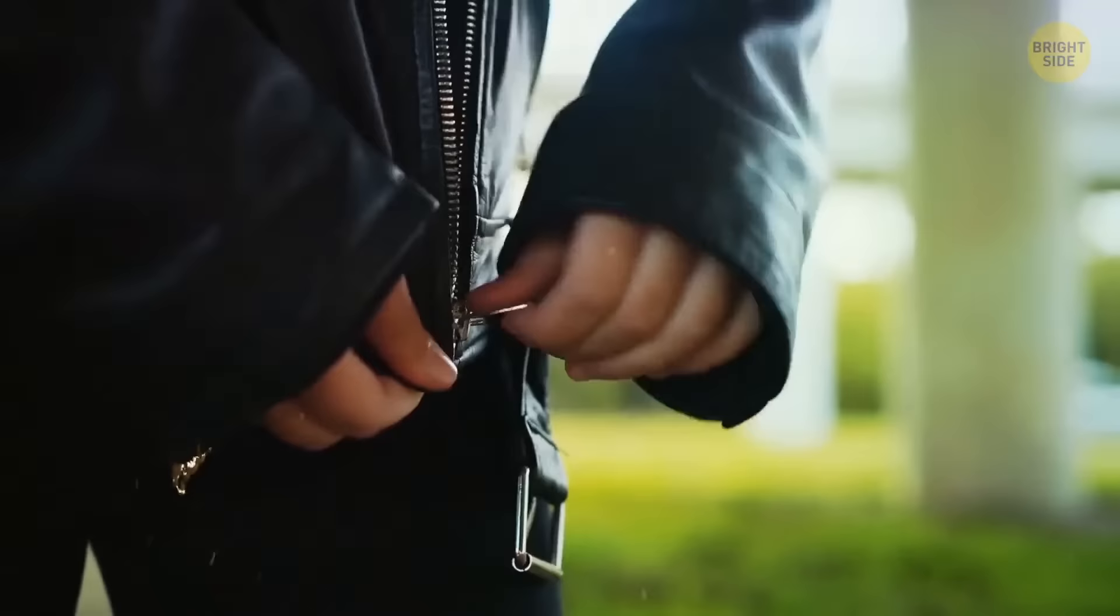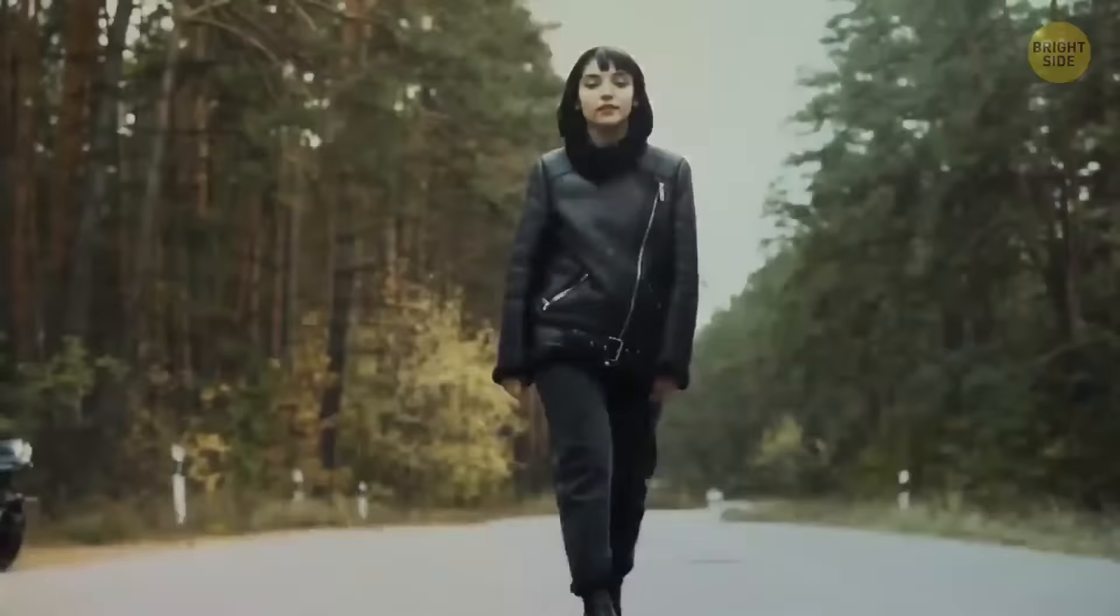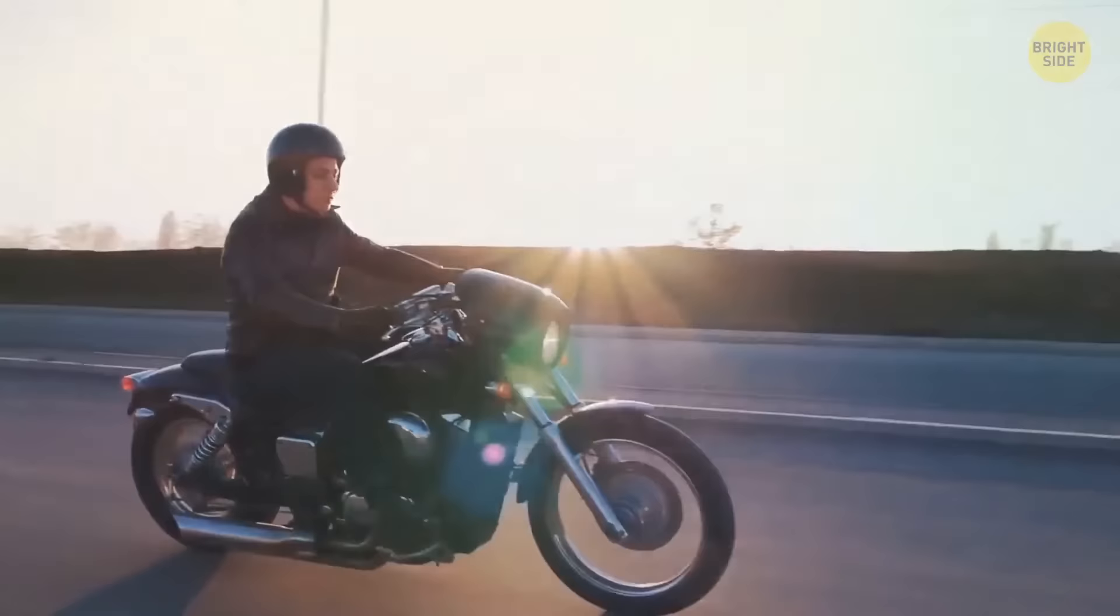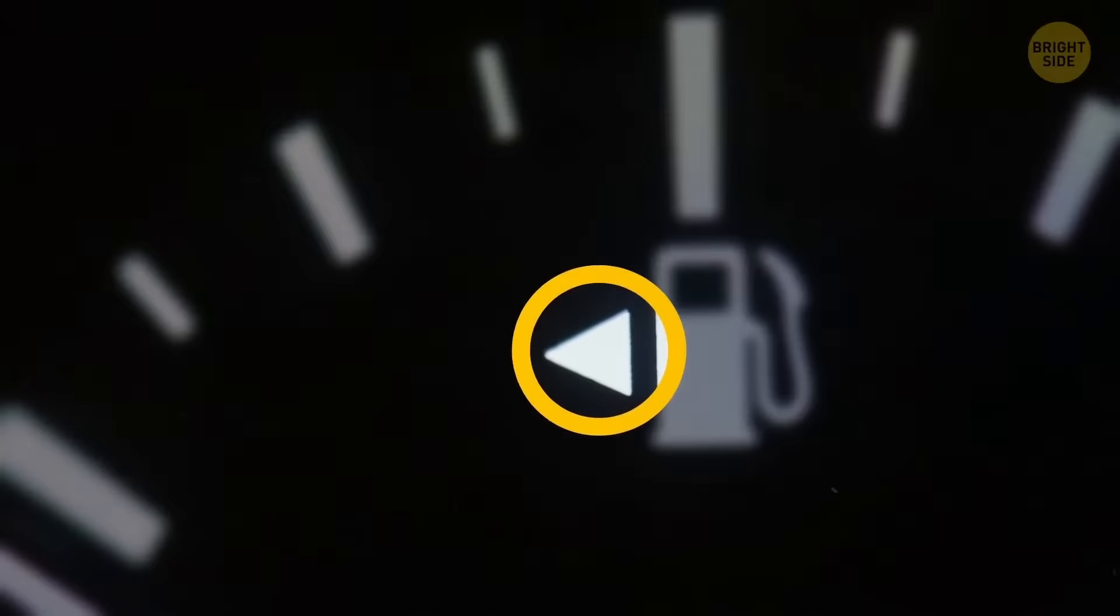The zipper on leather biker jackets is often sewn diagonally. It's not just a fashion statement. Zips that are stitched vertically can bunch up if the wearer leans forward, but a diagonal zipper won't. That little triangle on your gas gauge is there to let you know which side of the car your gas cap is on. Now you'll never pull up to the wrong side of the pump in a rental car again.